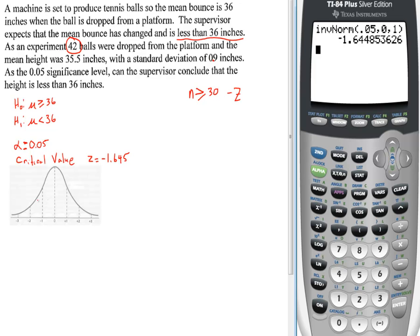And that gives us a critical value of Z equal to negative 1.645. And we'll sketch that. That's a little more than halfway between here. So this is our critical Z value, negative 1.645. Which means anything above that is the machine is fine. Anything below that tells us the machine is no longer producing tennis balls that bounce to 36 inches.